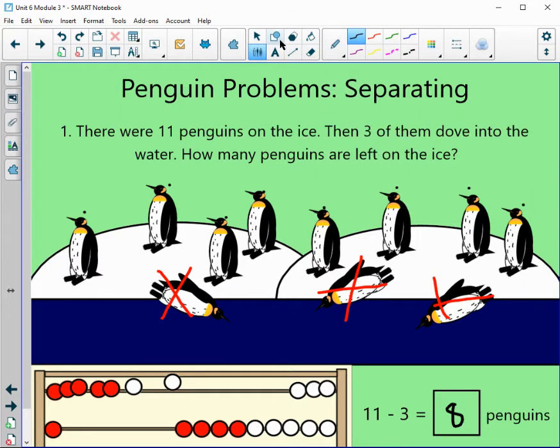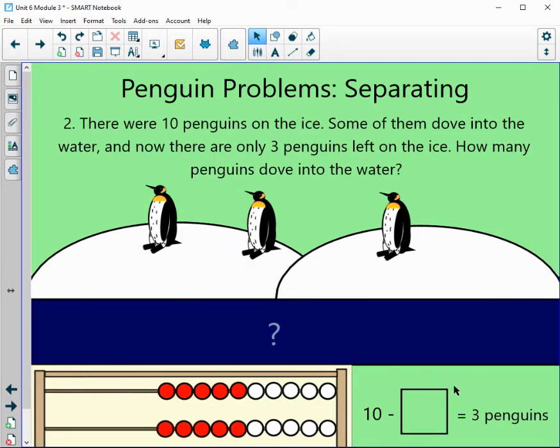Your next problem has the part unknown, the middle part. We have 10 minus something equals 3. When we read our problem, there are 10 penguins on the ice. That's where we get our 10 from. Some of them dove into the water. And now there are only 3 penguins left on the ice. So how many penguins dove into the water?